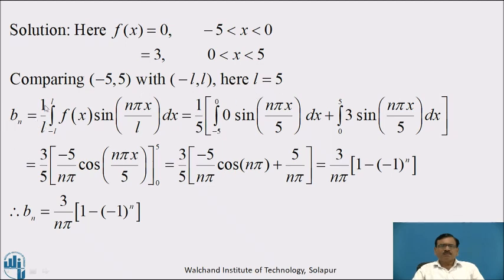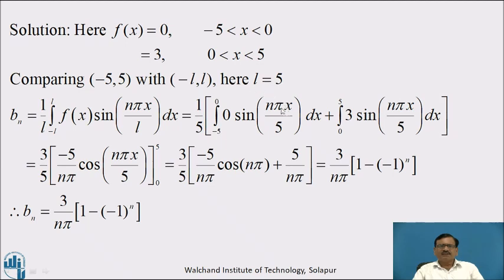Now bₙ = (1/L) ∫₋ₗᴸ f(x) sin(nπx/L) dx, which is equal to (1/5) times: integration from -5 to 0 of 0 · sin(nπx/L) dx, plus integration from 0 to 5 of 3 · sin(nπx/L) dx. This equals (3/L) times the second integral, as the first integral is zero.